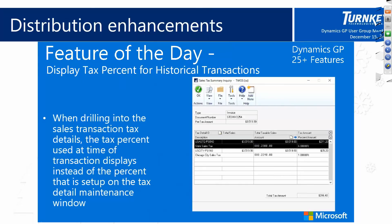They've added the ability to display tax percentages for historical transactions. Now when you drill down to tax details on a sales or purchasing transaction, it will actually tell you the percentage that was used for that tax calculation, whereas before it was difficult to find. It will display what was used at the time the transaction was put through versus what's actually set up currently — so if your tax rate has changed since the transaction was entered, it keeps a history of that saved with the transaction.